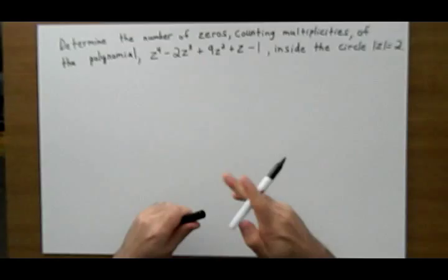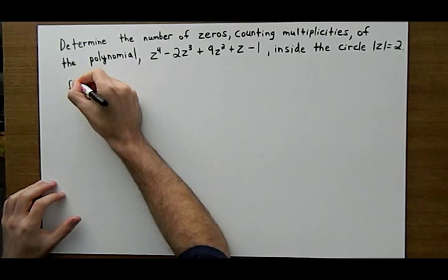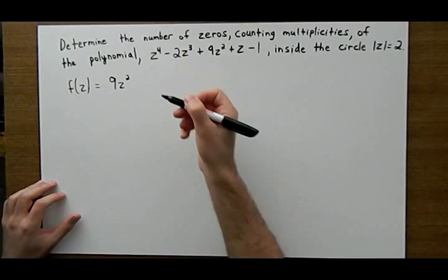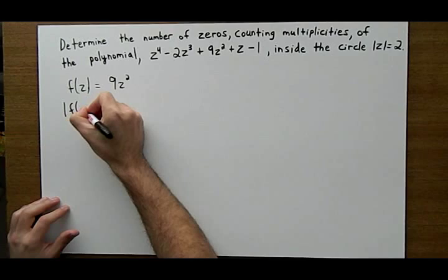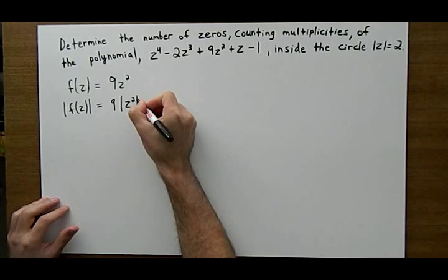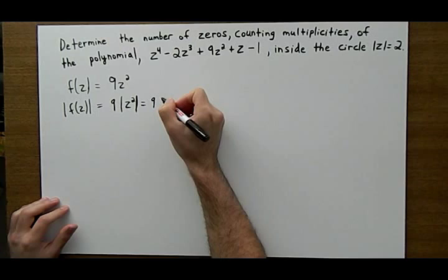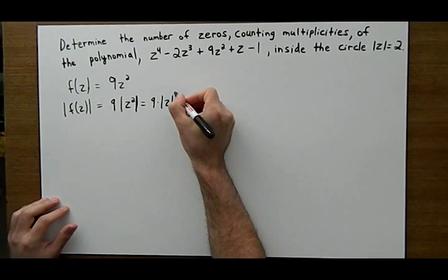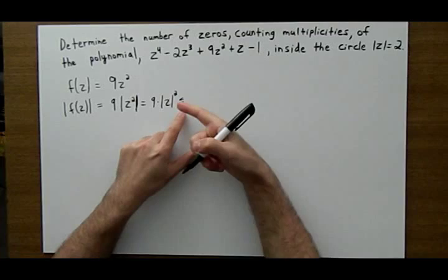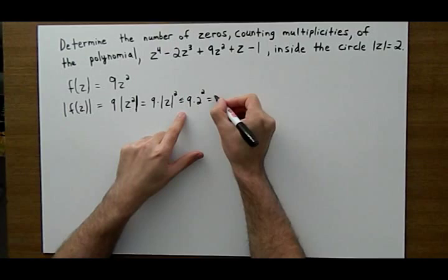So suppose that f is equal to 9z squared. And now the modulus of f is equal to 9 times the modulus of z squared, but that's just equal to 9 times z and then the square goes outside, which is equal to 9 times 2 squared, which is just basically 36.